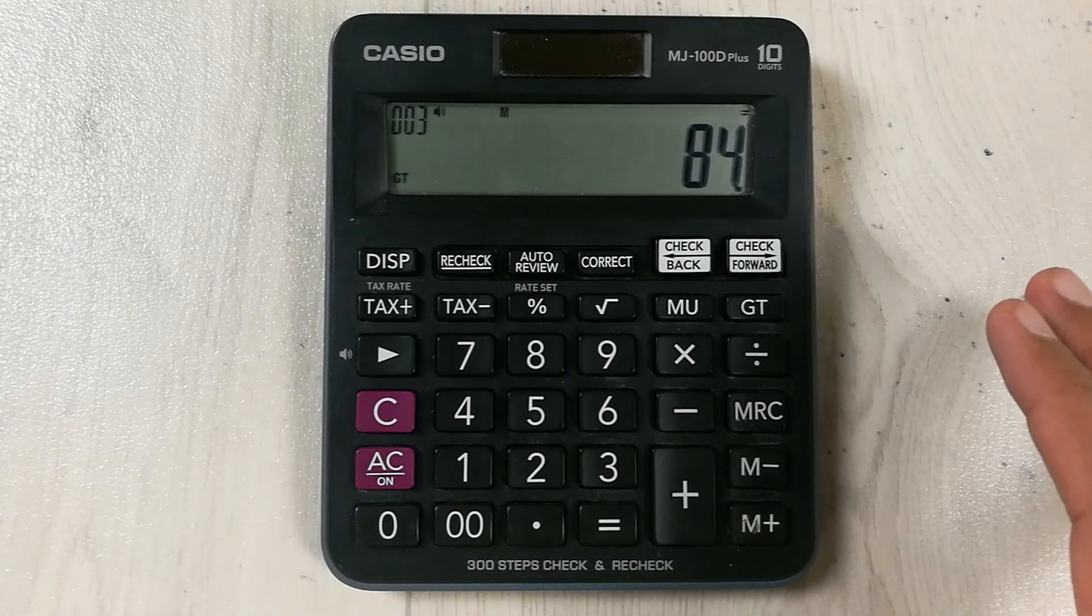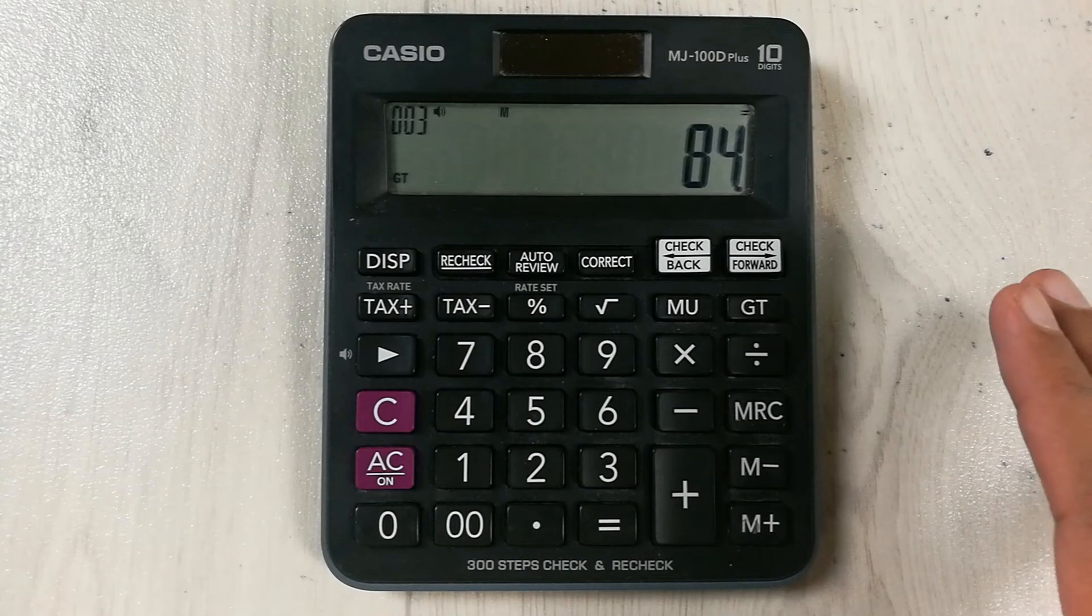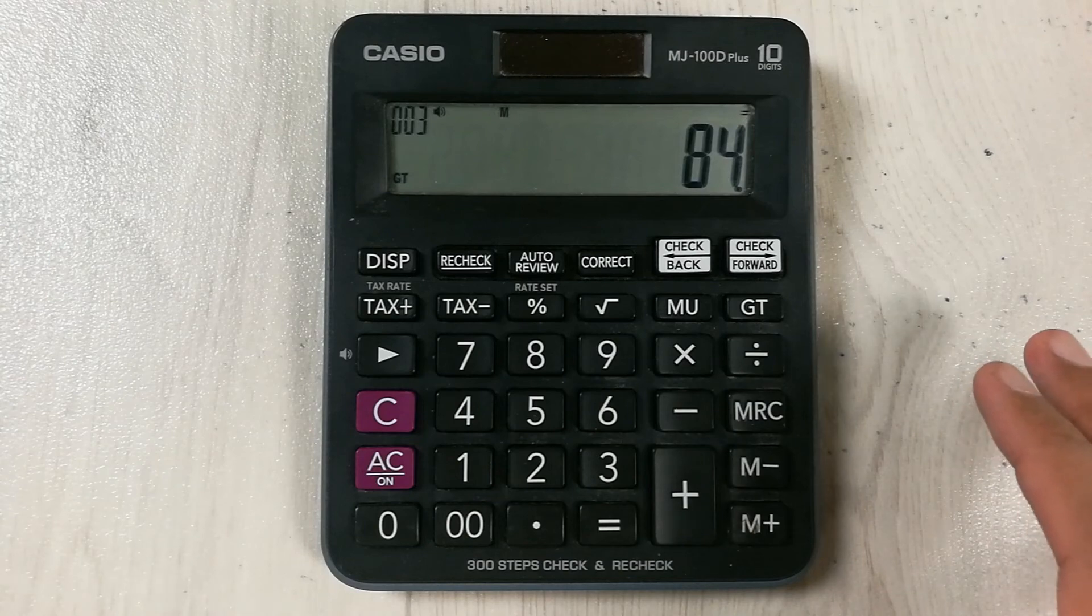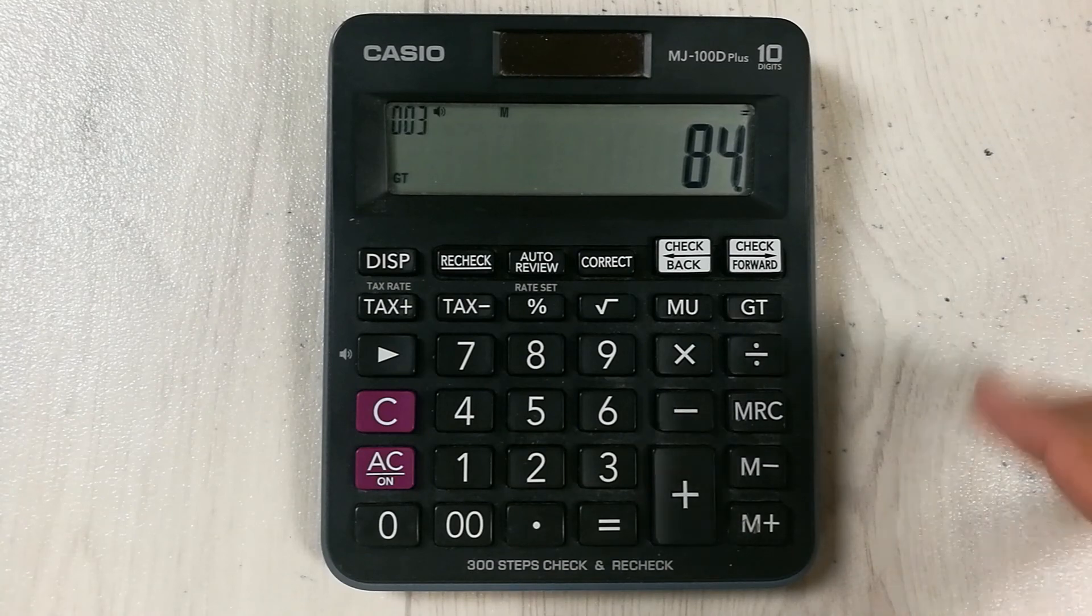Then simply divide the total price by the total area in square feet. Then you will get the answer, the price per square foot.